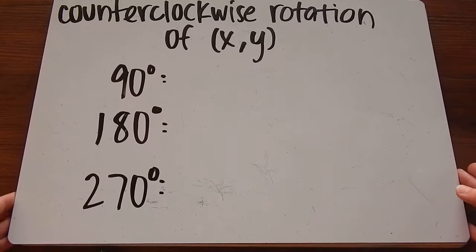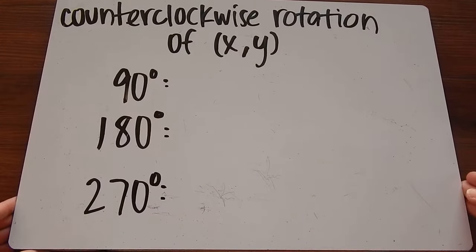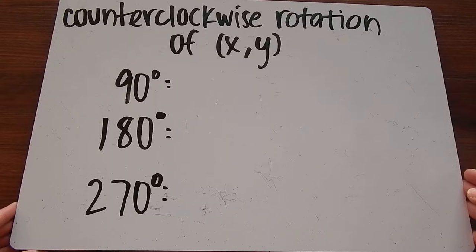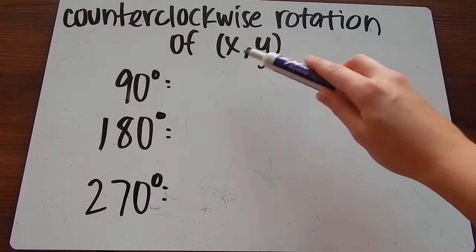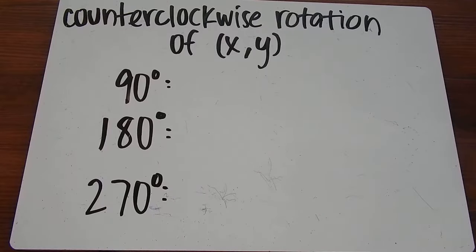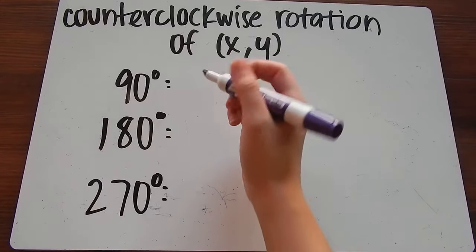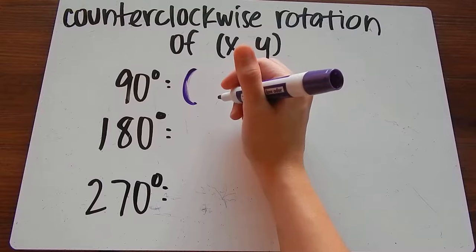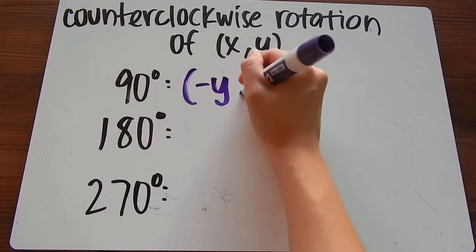We are generally going to be doing counterclockwise rotation, so that's all this lesson is over today. When we rotate a point (x, y) counterclockwise 90 degrees, our new coordinate is going to be (-y, x).